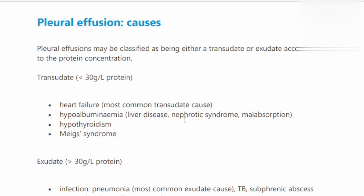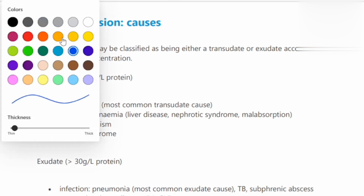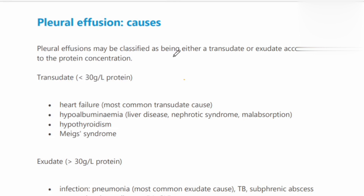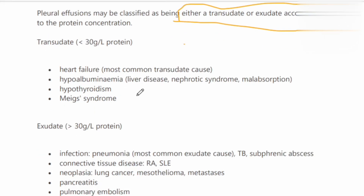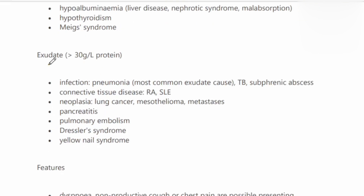What are the causes of pleural effusion? On the basis of protein concentration, pleural fluid is divided into two types: transudate or exudate. If protein concentration is less than 30 grams per liter, it is known as a transudate. The causes include heart failure — the most common cause — hypoalbuminemia due to liver disease, nephrotic syndrome, malabsorption, hypothyroidism, and Meigs' syndrome.